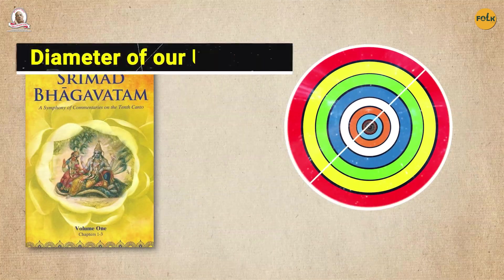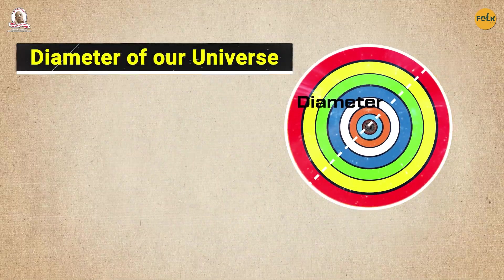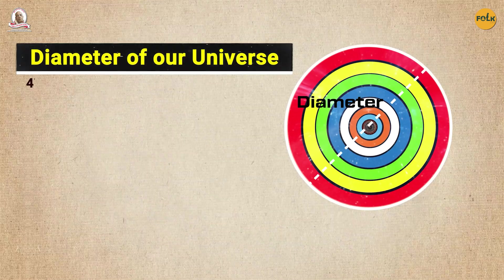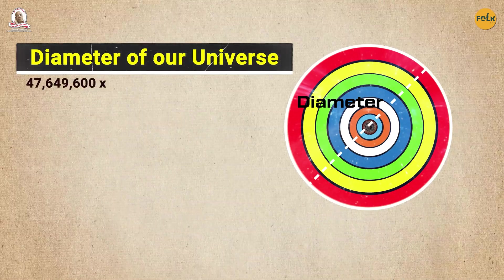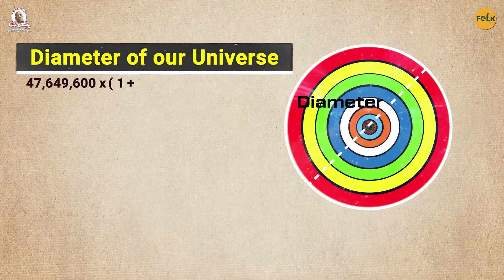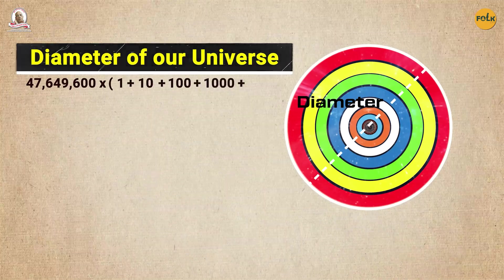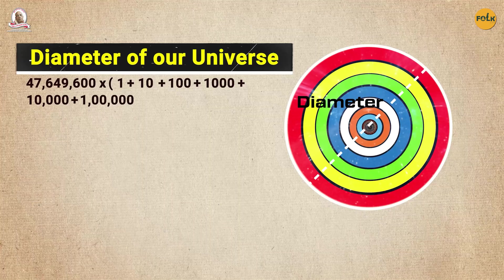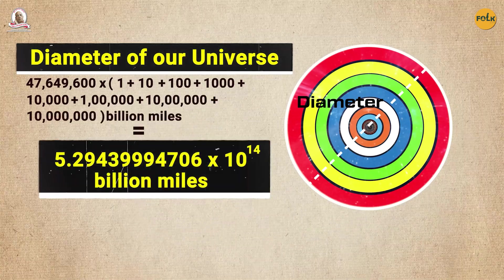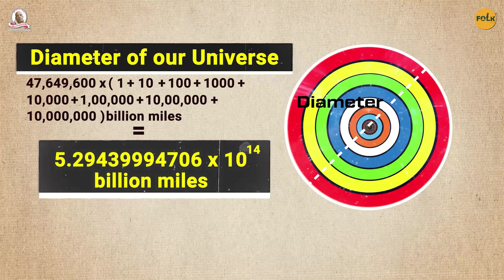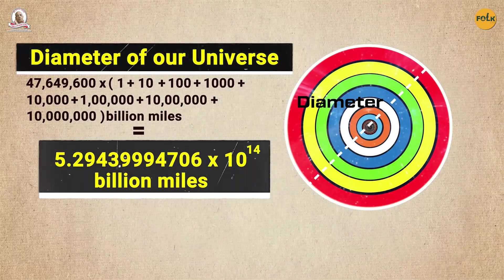So the diameter up to the outermost layer of our universe will be calculated as 47,649,600,000 into one plus ten plus one hundred plus one thousand plus ten thousand plus one lakh plus one crore plus ten million, equals 5.29439994707 into ten to the power of 14 billion miles.